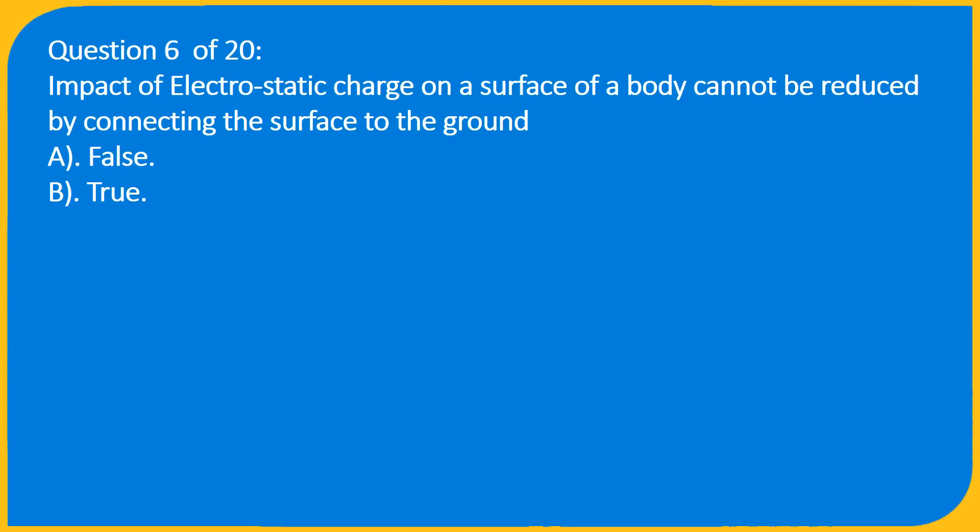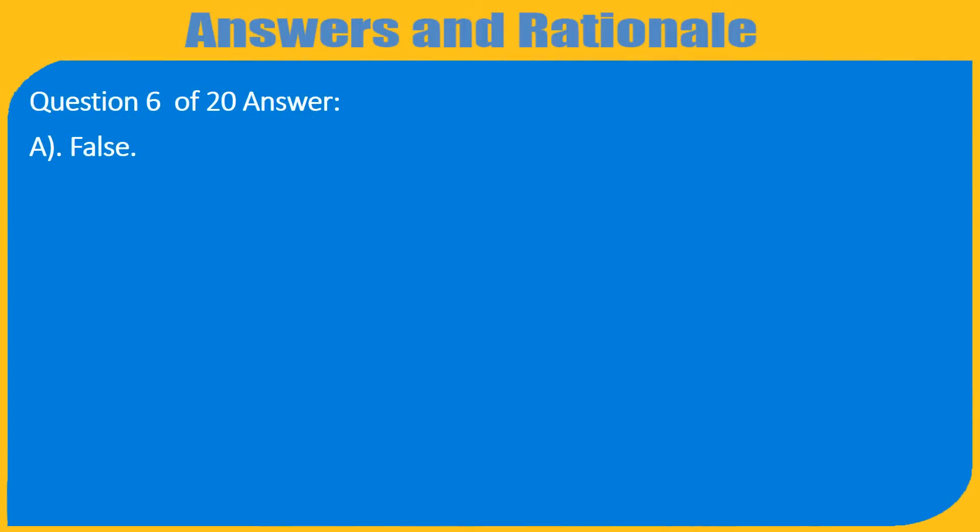Question 6 of 20: The impact of electrostatic charge on the surface of a body cannot be reduced by connecting the surface to the ground. A. False, B. True. Answer: A. False.